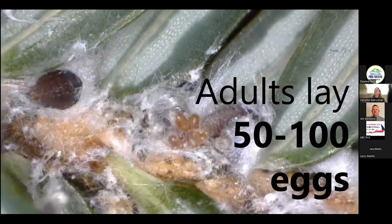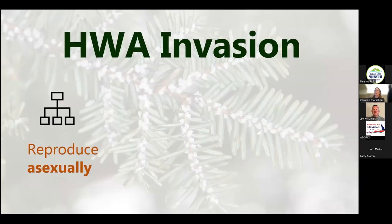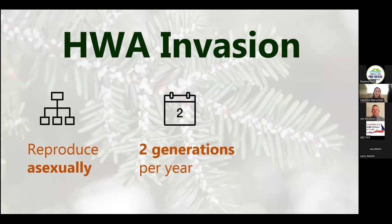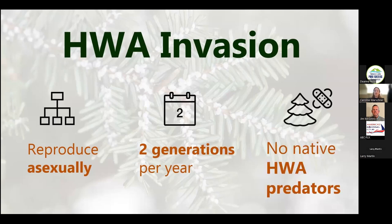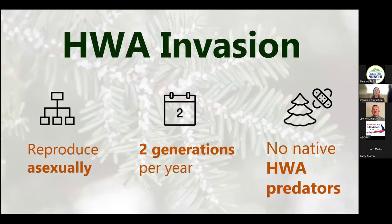Each adult lays 50 to 100 eggs. The fact that we have asexual reproduction — so one insect arriving in a stand can start a new infestation — combined with two generations a year, two opportunities for exponential growth, and no native HWA predators, is why we're having this outbreak condition where this pest is killing so many of our trees.